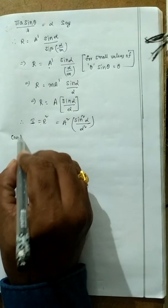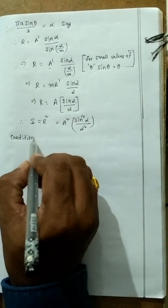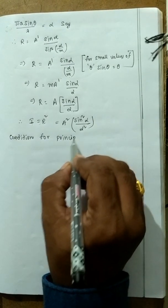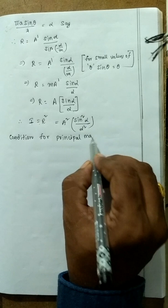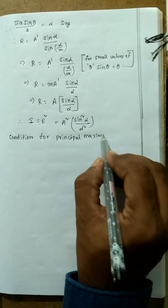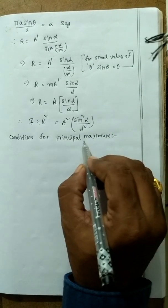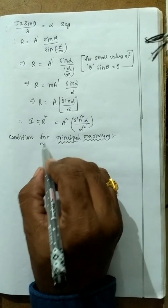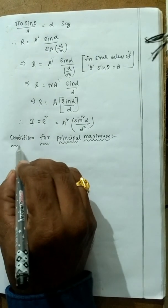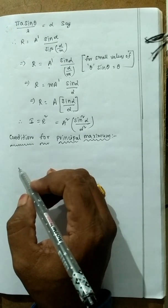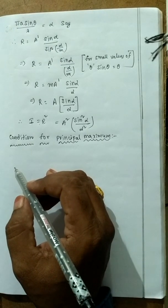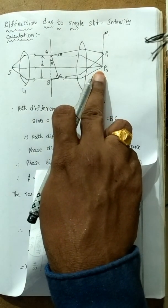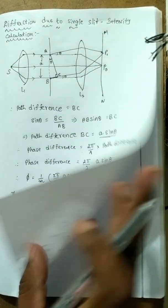Condition for principal maxima: we get maximum intensity at the center, at position P0, where rays are not participating in diffraction and reach the screen directly.